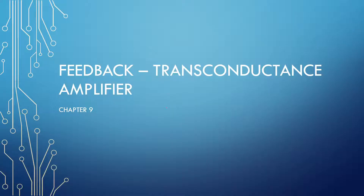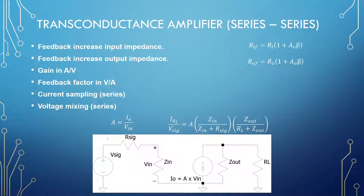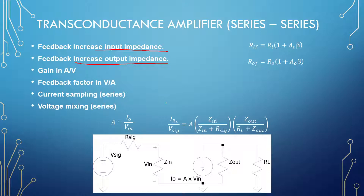Welcome to a video on the transconductance amplifier, discussing feedback in the series-series topology. This is when we take a voltage in and provide a current out. For a voltage in we need a very large input impedance, and for a current out we need a very large output impedance. So with feedback, the input impedance should increase and the output impedance should increase.